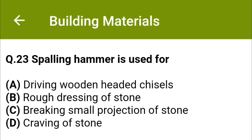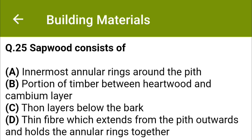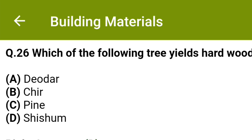The correct answer is Option D, curving of stone. Crosscut saw is used for Option A cutting soft stone, Option B cutting hard stone, Option C cutting large blocks of stone, Option D dressing stones. The correct answer is Option B, cutting hard stone. Sapwood consists of Option A innermost annular rings around the pith, Option B portion of timber between heartwood and cambium layer, Option C thorn layers below the bark, Option D thin fibers which extend from the pith outwards and hold the annular rings together. The correct answer is Option B, portion of timber between heartwood and cambium layer.